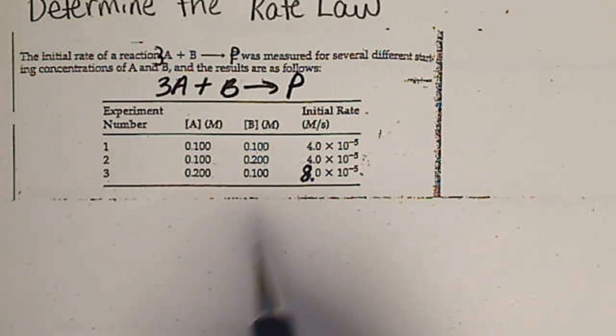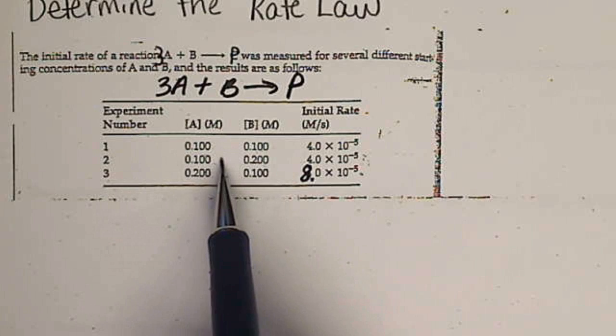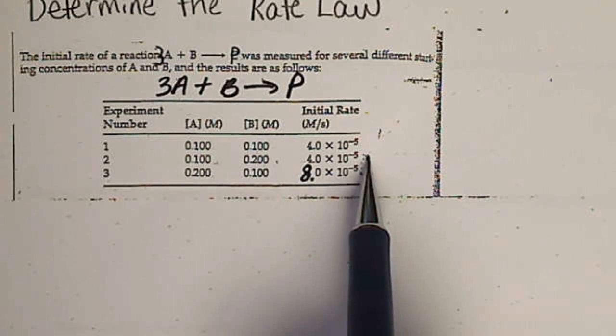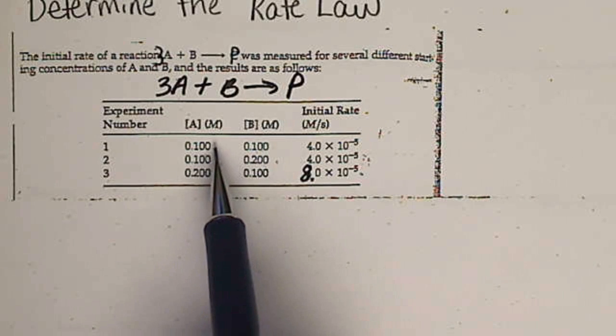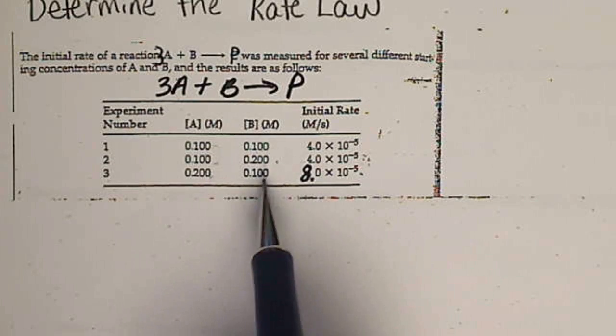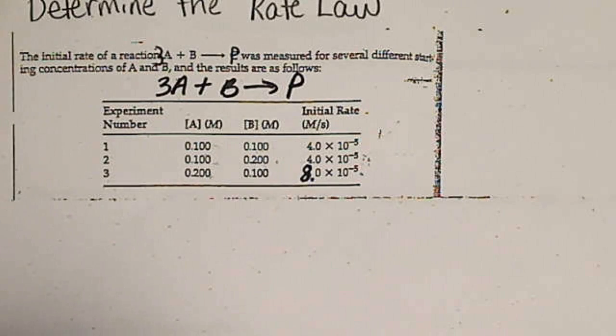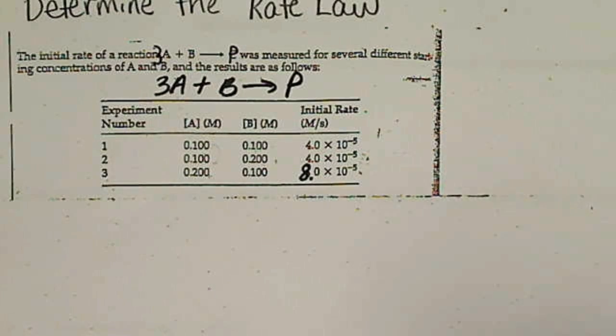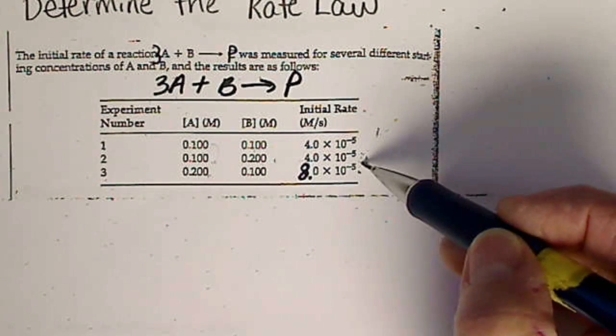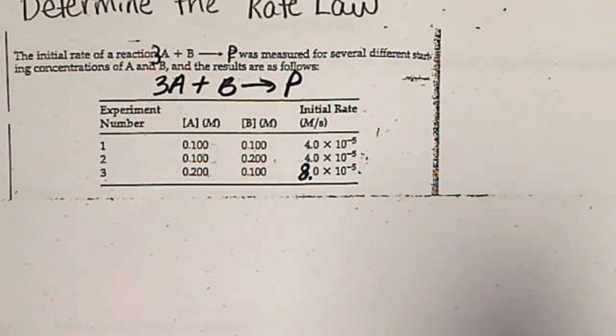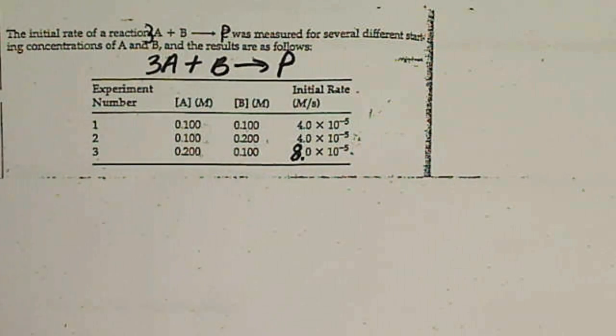Then in the second experiment, we keep A the same and we double B and measure the rate. Then we double A in experiment 3 while we keep B the same. So if we control the initial concentrations, and if we're able to measure a rate, then we can determine the rate law for any reaction.